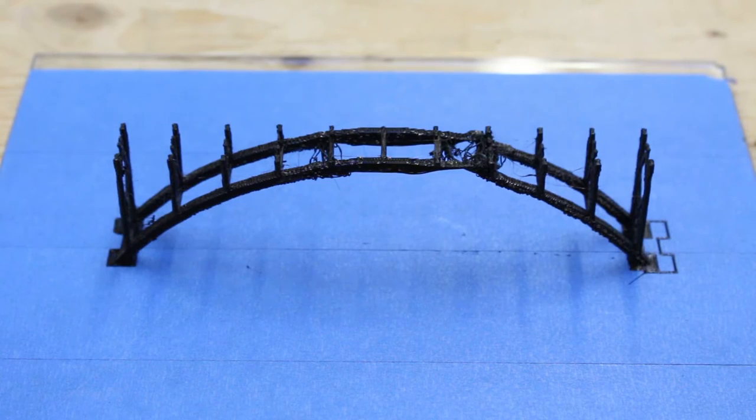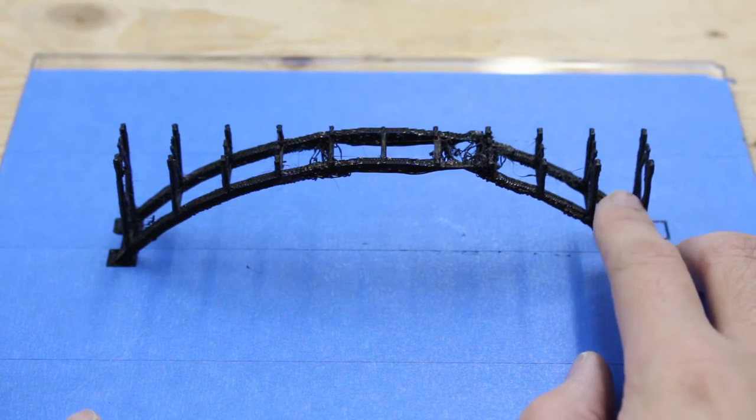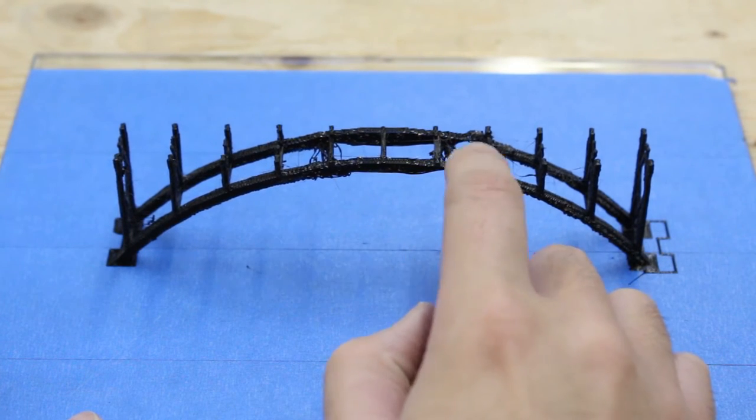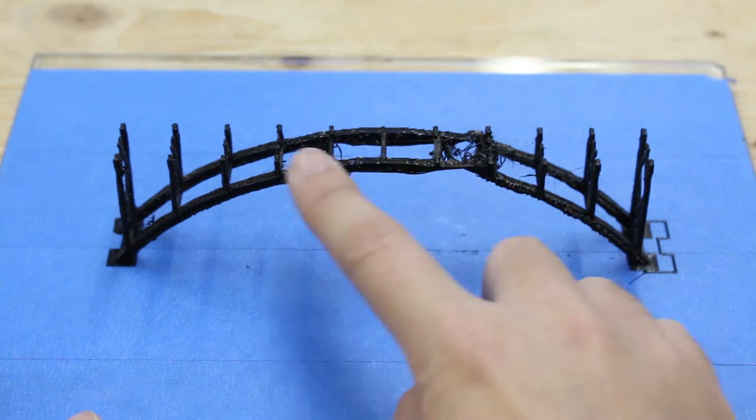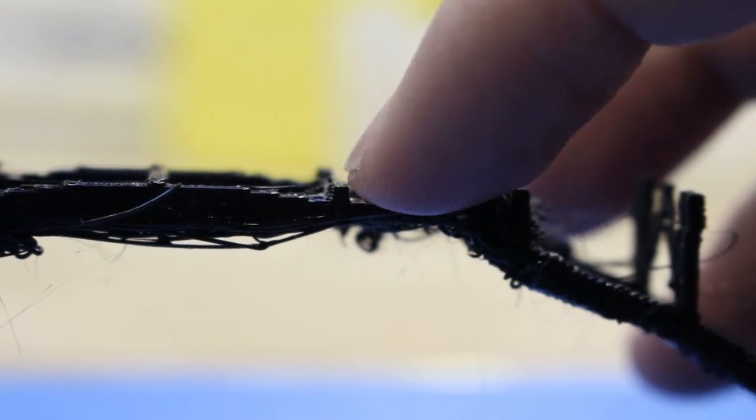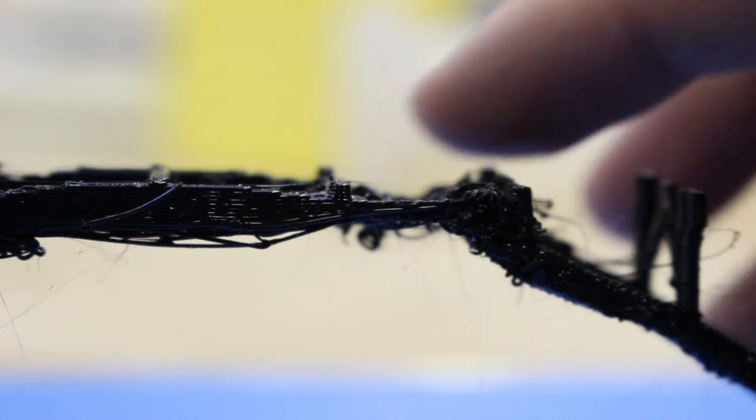It started out really nice on the sides and then it looks like the bridging started to fail here. I think it wasn't sturdy enough here causing the print to move up and down. It may also be the orientation of the print, so let's flip it around and see how it prints.